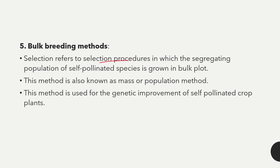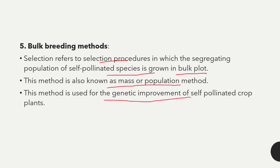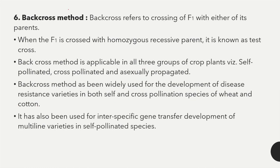In the bulk breeding method, the segregating population of self-pollinated species is grown in bulk plots. This method is used for the genetic improvement of self-pollinated crop plants.